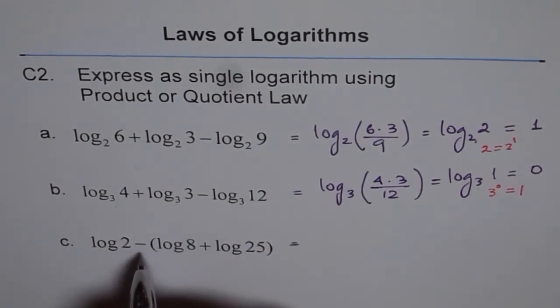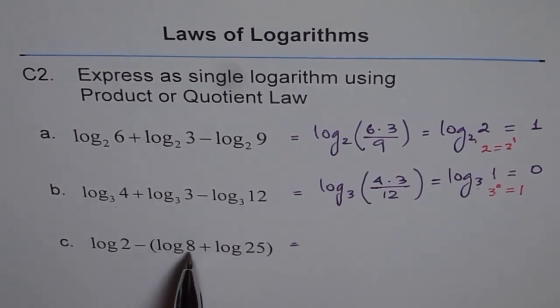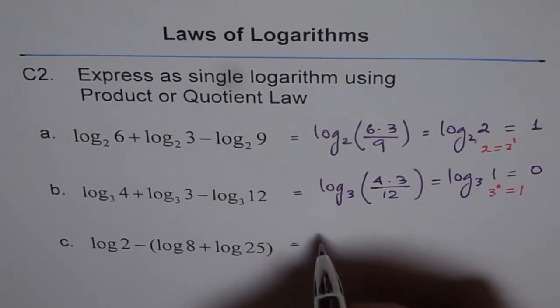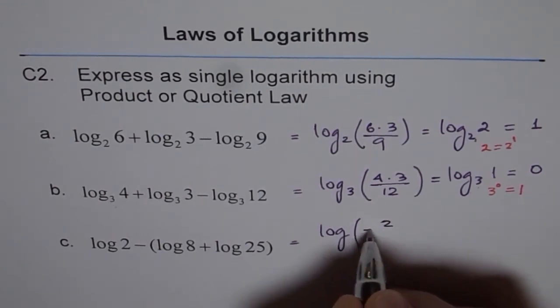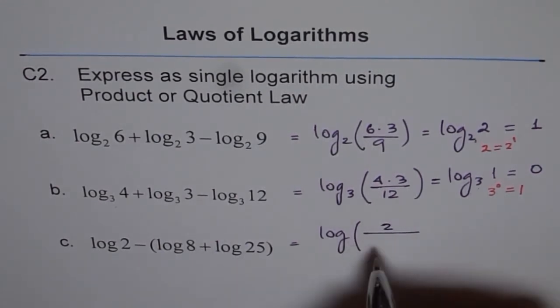Now here log of 2 minus all this. So 2 comes in the numerator and all that comes in the denominator. And what is this? This is 8 times 25. So I could write this as log of 2 in the numerator and in the denominator 8 times 25.